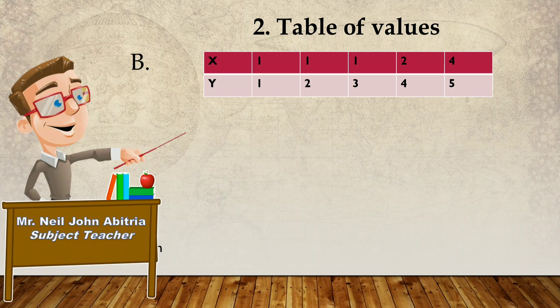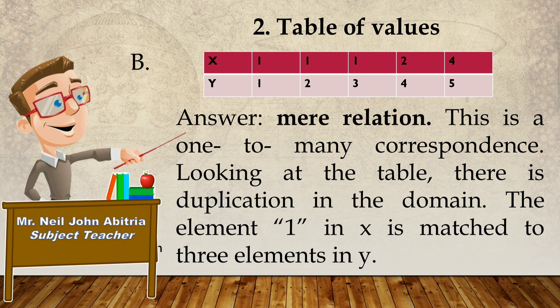Letter B. Is it a mere relation or a function? Very good. This is a mere relation. Because this is a one-to-many correspondence. Looking at the table, there is duplication in the domain. The element 1 in X is matched to 3 elements of Y.